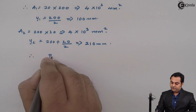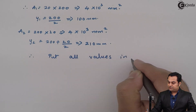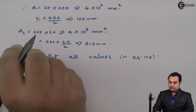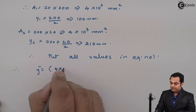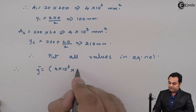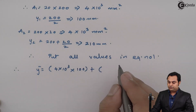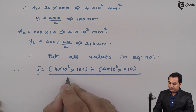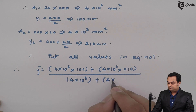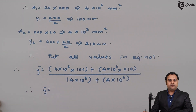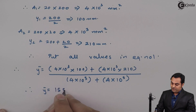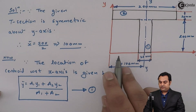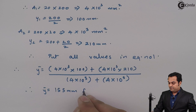Substituting all values into equation one: y-bar = (4×10³ × 100 + 4×10³ × 210) / (4×10³ + 4×10³). This gives y-bar = 155 mm from the bottom.